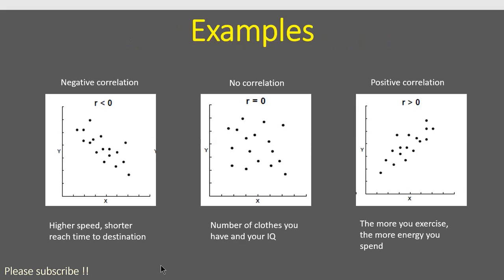Let's go through some examples. The first graph shows two variables X and Y with a negative correlation, where the correlation coefficient is less than zero. An example of this is: the higher the speed of your car, the shorter the travel time to your destination. So as speed increases, reach time decreases — one increases while the other decreases. Here, X is increasing and Y is decreasing.